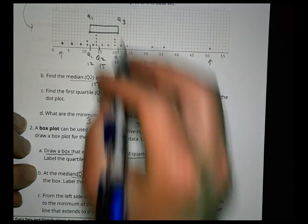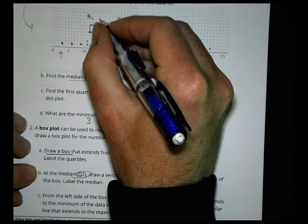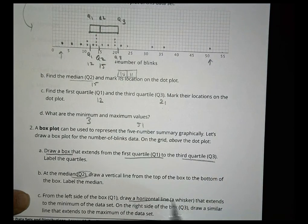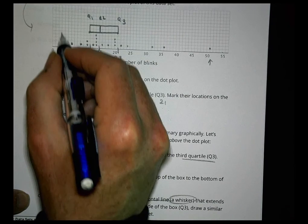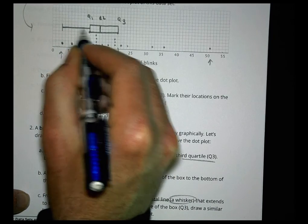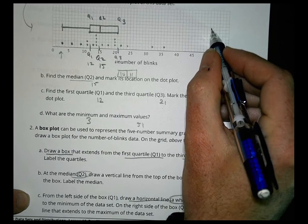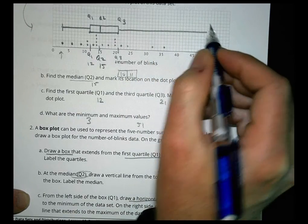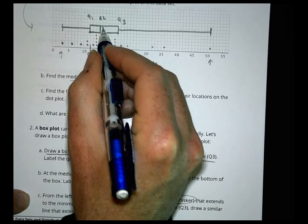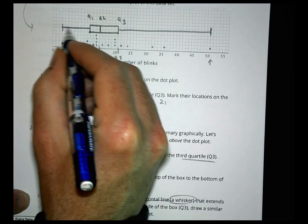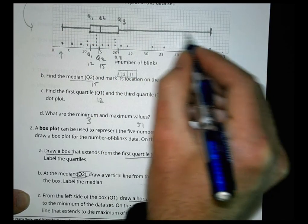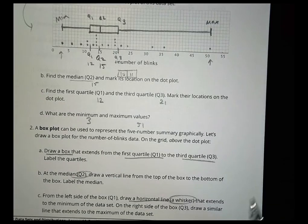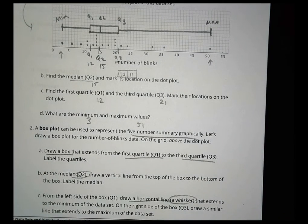Next, at the median Q2, draw a vertical line. So our median's here at fifteen, so we're going to draw a vertical line right there. And that is where Q2 is at. And then from the left side of the box, we're going to draw a horizontal line, a whisker, that extends to the minimum. So our minimum's right here at three. Then we'll draw a whisker over here that extends out to fifty-one. And that is all you have to do to create a box plot.